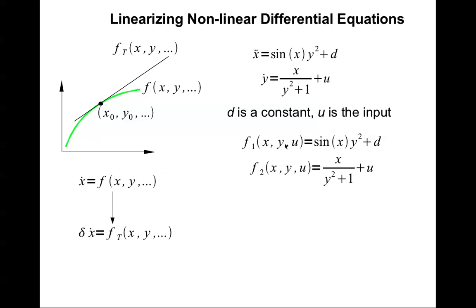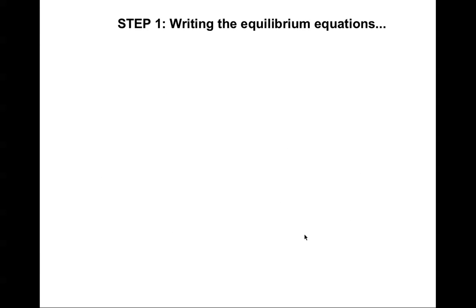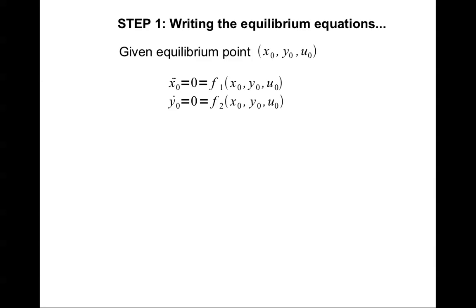We make the identification: the first nonlinear function f1 is the first equation, and the second nonlinear function f2 is the second. Therefore we write the dynamic equations as x-double-dot equals f1, y-double-dot and y-dot equal to f2. The first step in deriving the linear equations is to write the equilibrium equations. Given an equilibrium point x-naught, y-naught, u-naught, equilibrium means the system is stationary — all derivatives are zero.